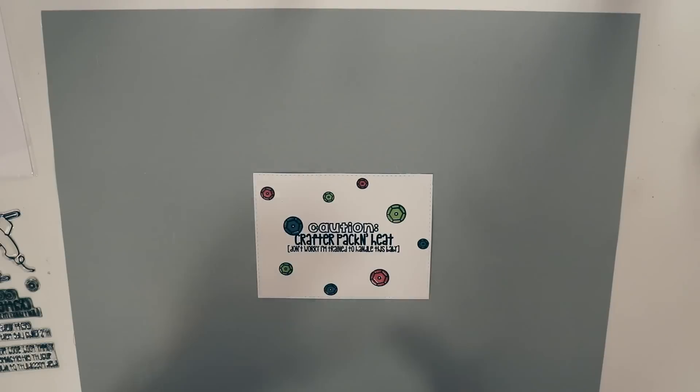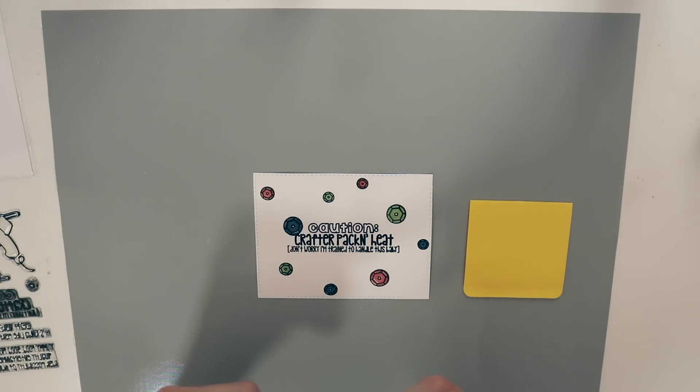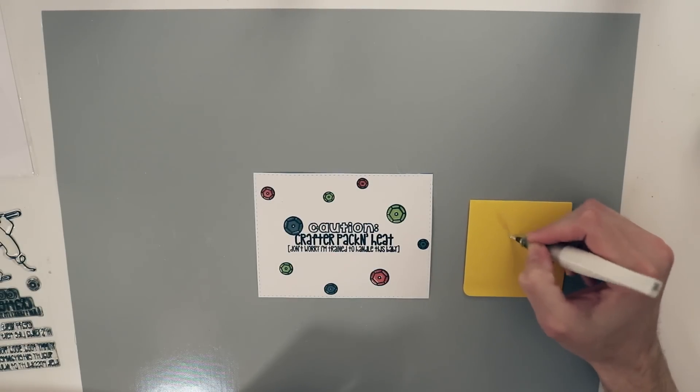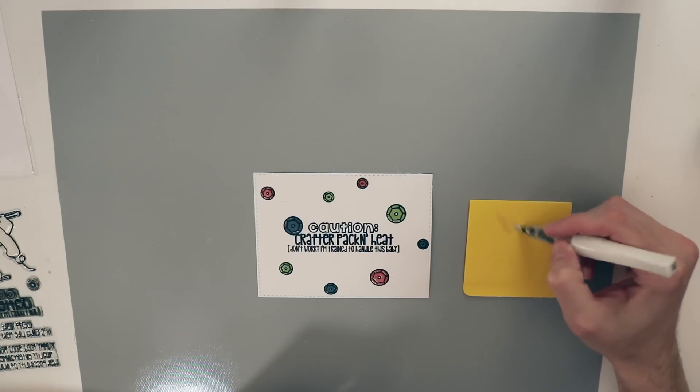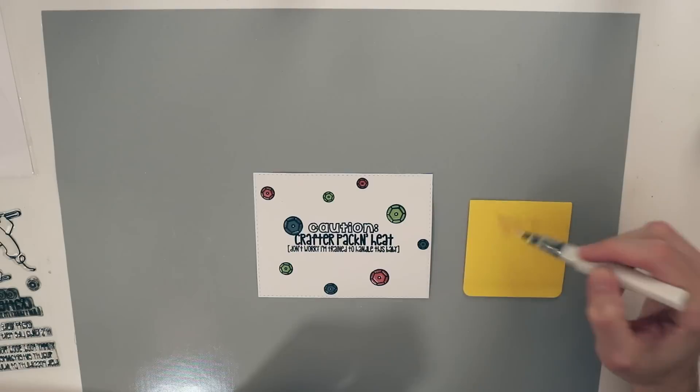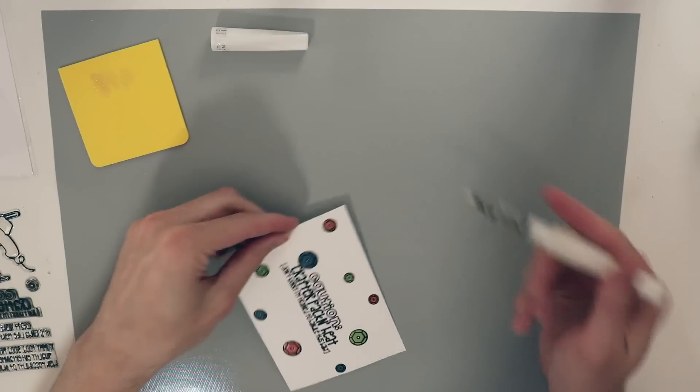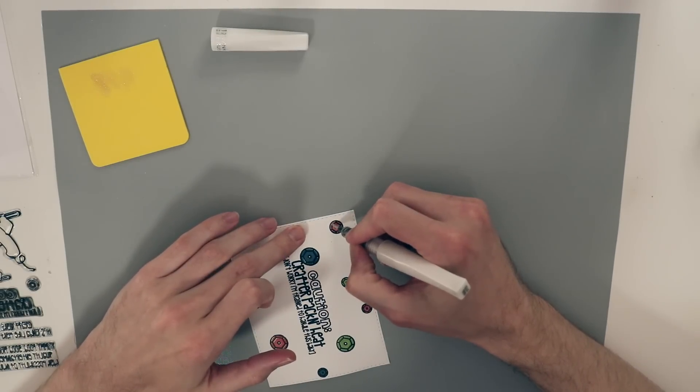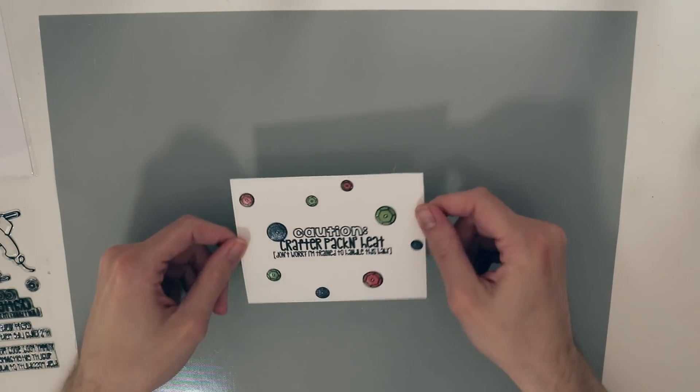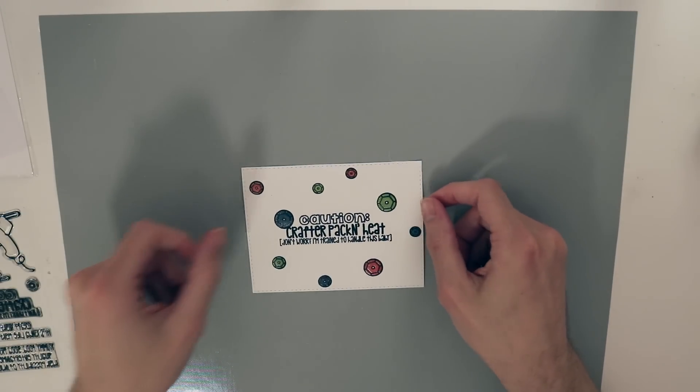I am going to add some Wink of Stella. I want my sequins to be nice and shiny so I'm going to grab my Wink of Stella pen and get it started. I haven't used this one in a while so I need to get it restarted again. I'm going to gently squeeze to try and get a little more of that shimmer coming out. Now I'm going to use it on the sequins to add a little more shine to them. I don't know if you're going to be able to see any of that glittery goodness but it is now all nice and glittery.